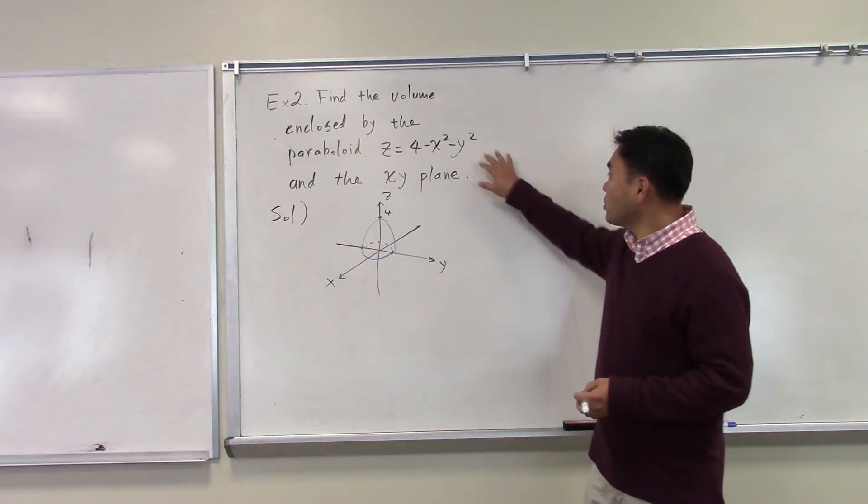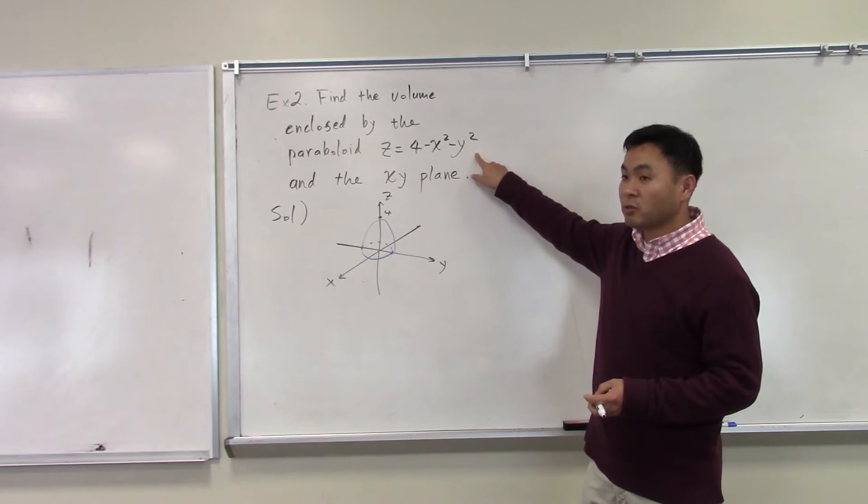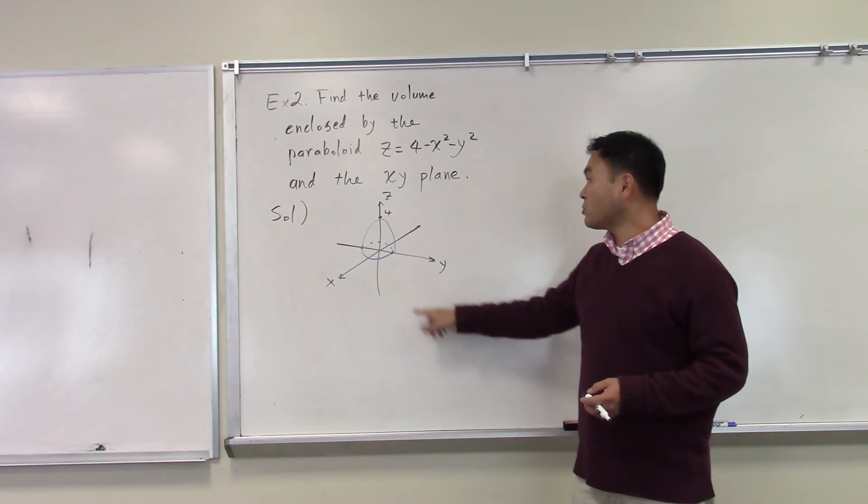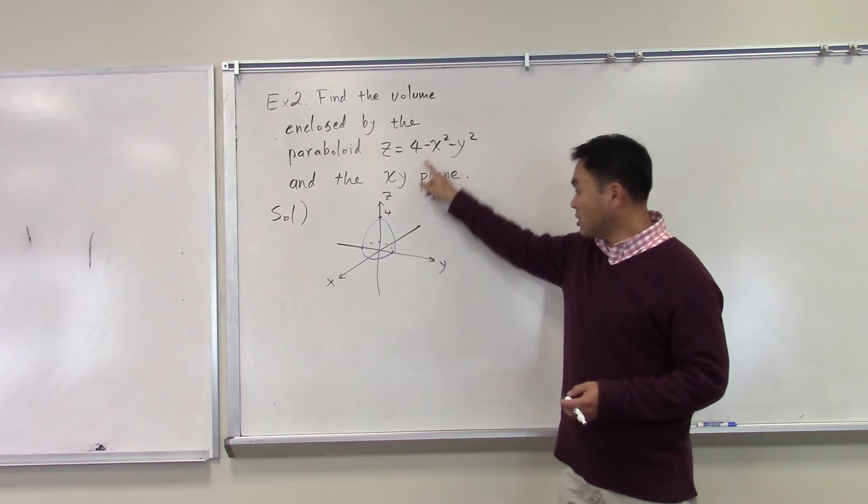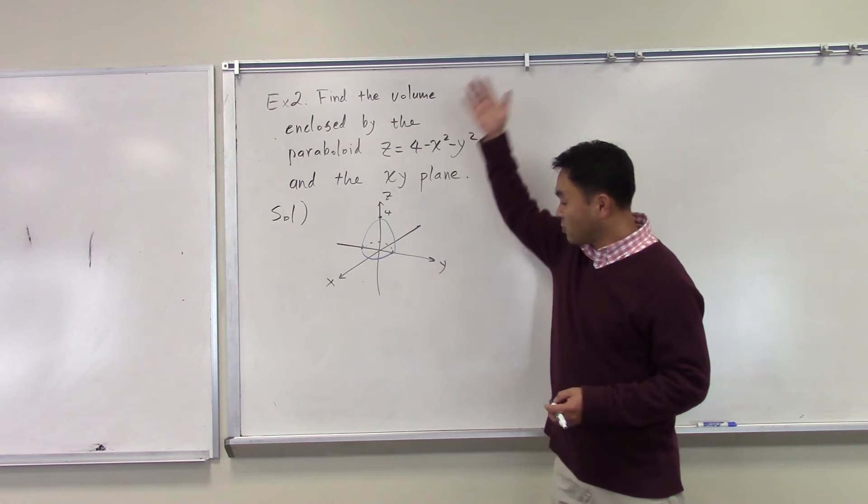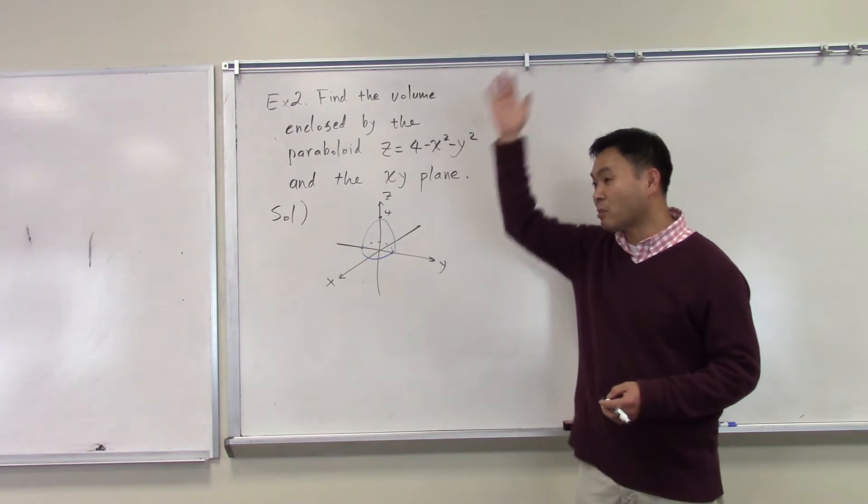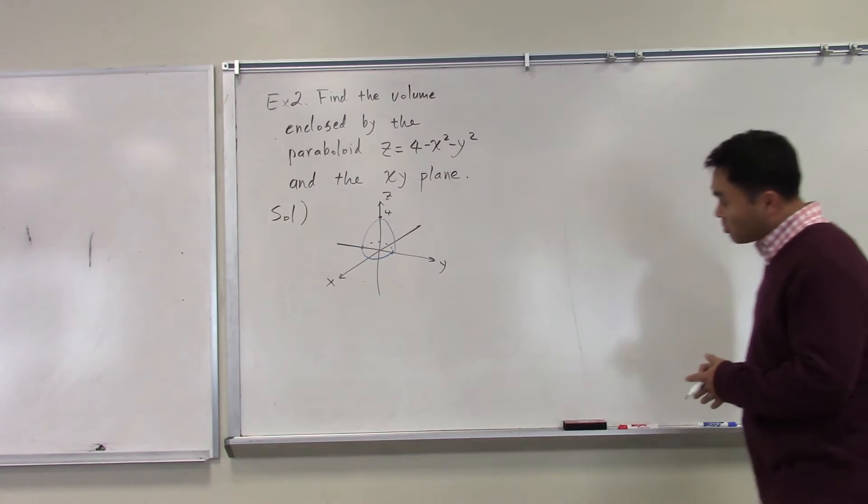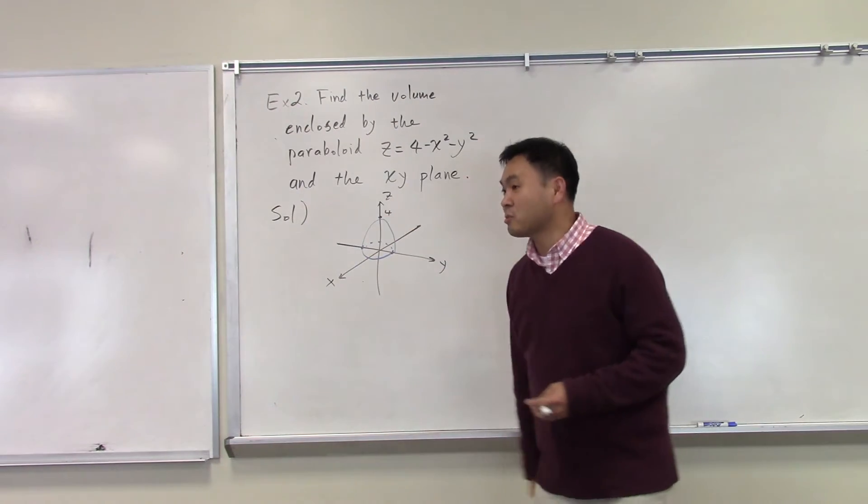Now if you took your time to draw the xy trace, yz trace, and xz trace, you will find that this actually gives you the paraboloid where if you cut it this way you get a parabola, and if you cut it that way you get circles. So that's the region that we're trying to find the volume of.